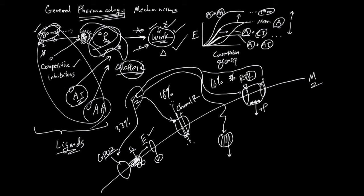Similar to RTK, you have the cytokine receptor family. Here's a receptor, and a pharmaceutical ligand can bind to it — usually these ligands are much bigger. Because of this binding, another receptor can come and bind to this ligand-receptor surface, resulting in dimerization. For RTKs the tail can do the work directly, but for the cytokine receptor family, another protein — maybe multiple proteins — will come and bind to the cytokine tail to help do the work.